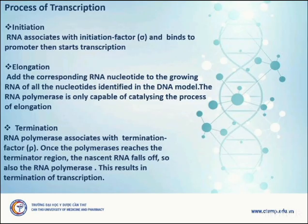Process of Transcription. Initiation: RNA polymerase associates with initiation factor sigma and binds to the promoter, then starts transcription. Elongation: The corresponding RNA nucleotide is added to the growing RNA for all nucleotides identified in the DNA template. The RNA polymerase is only capable of catalyzing the process of elongation. Termination: RNA polymerase associates with termination factor rho. Once the polymerase reaches the termination region, the nascent RNA falls off, as does the RNA polymerase, resulting in termination of transcription.